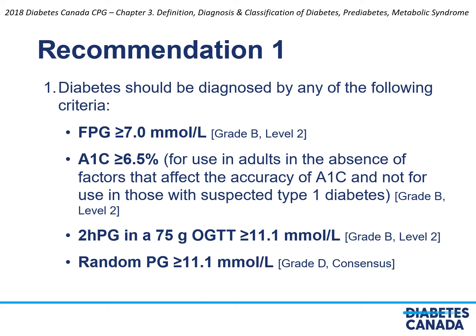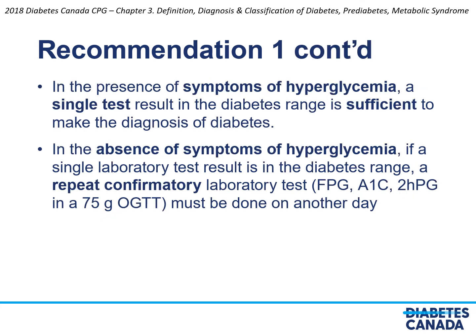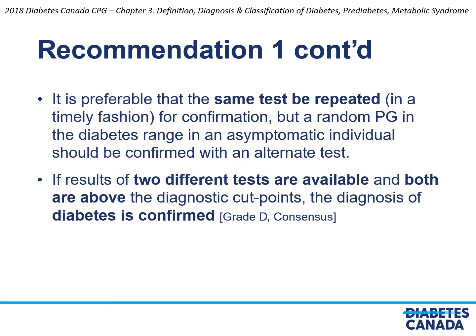The following slides reiterate the diagnostic criteria for diabetes and prediabetes as recommendations with their grade of recommendation and the level of evidence supporting those recommendations. Diabetes diagnosis can be made on the basis of fasting plasma glucose, hemoglobin A1c when appropriate, a two-hour plasma glucose in the setting of a 75 gram oral glucose tolerance test, or with a random plasma glucose. In patients with symptoms of hyperglycemia, a single test is adequate to make a diagnosis of diabetes, but in the absence of symptoms, a second test should be done to confirm the diagnosis. It's preferable to repeat the same test on a separate day for confirmation, but if a random glucose was the initial test, then one of the others should be used. If two different test results are available on the same day and both suggest diabetes, then separate testing is not required for confirmation.